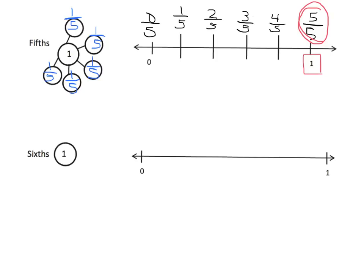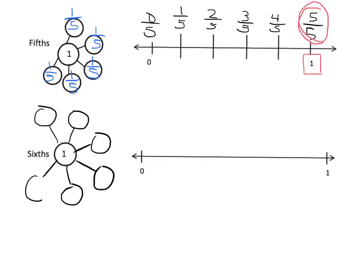Let's try this with sixths to make one whole. We're going to make our number bond, and because we're getting good at this, we're going to recognize it's going to include six one-sixths. So our number bond is going to be one-sixth, one-sixth, one-sixth, one-sixth, one-sixth, one-sixth. Of course, the number bond doesn't have to look exactly like this — students will figure out how to do it.